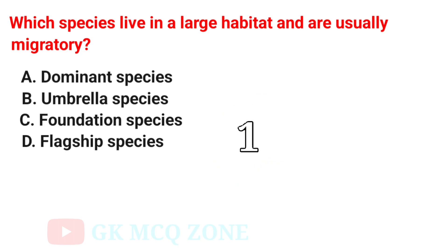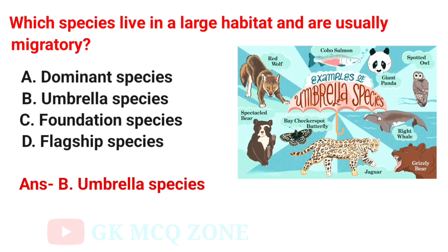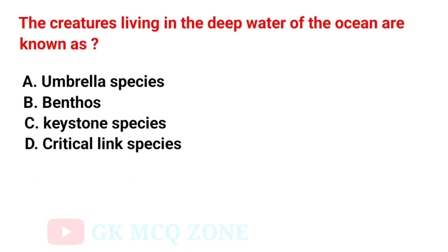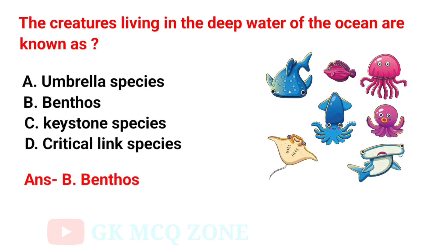Which species live in a large habitat and are usually migratory? The correct answer is Option B: Umbrella Species. The creatures living in the deep water of the ocean are known as — the correct answer is Option B: Benthos.